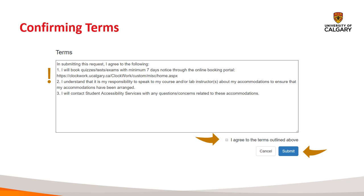Similarly, if you decided to issue your letters based on no changes but really do want to discuss the possibility of another accommodation, that's fine — just reach out to us. The easiest way is to send us an email at access@ucalgary.ca. Before you finish up, make sure you tick the 'I agree to terms outlined above' box at the bottom and hit submit.